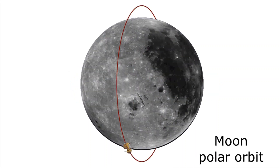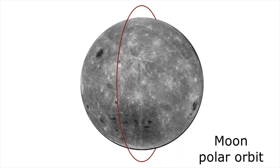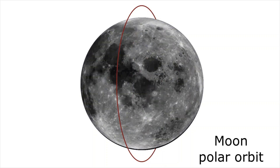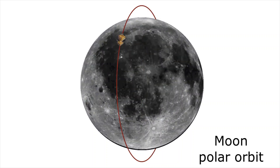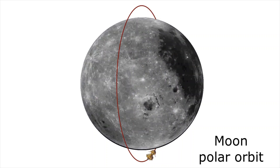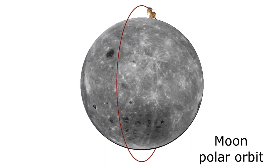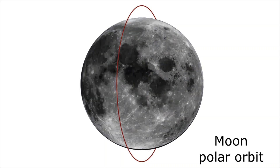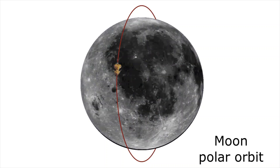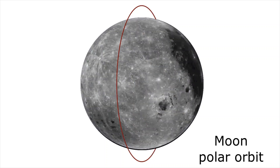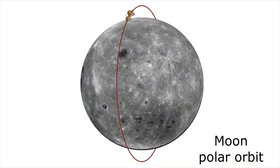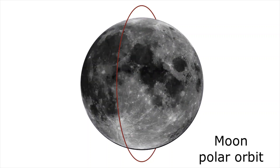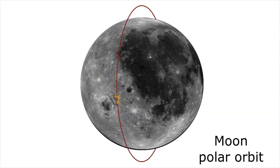On the other hand, a spacecraft in lunar polar orbit could observe or photograph the entire moon, including the equatorial areas. Therefore, for mapping the moon, the spacecraft should be in polar orbit.